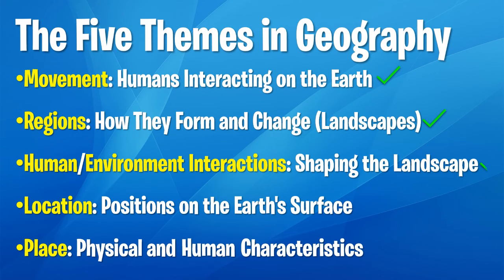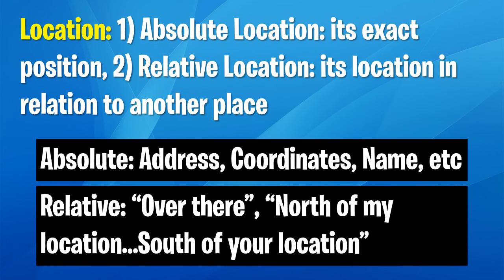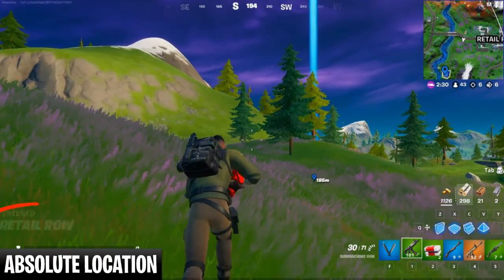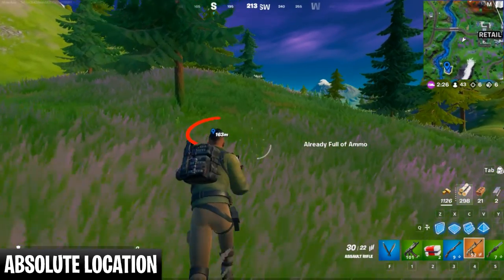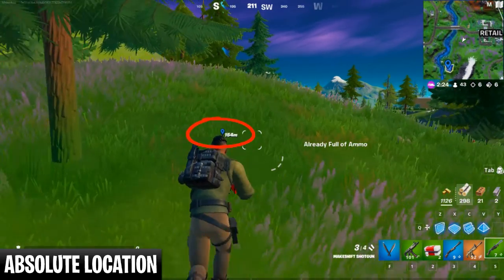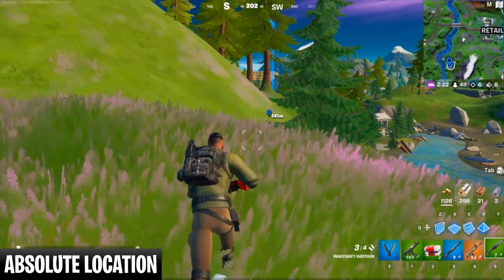Next is location. This theme is broken into two parts and focuses on specifying points on the planet — one does this absolutely, and the other does it relatively. Absolute location is exact, like an address, coordinate or place name. Relative location is relative to your position — over there, north of my location, south of your location. In Fortnite, absolute locations are things like place names — for example, here we can see Retail Row — and the waypoint counting down the meters until you reach your custom point. These are exact, so they are absolute.